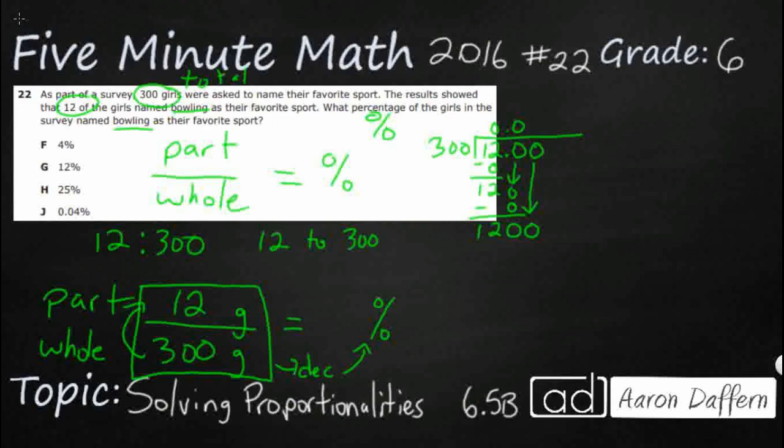So 300 goes into 1200, well look at this. Just ignore the two zeros, and just look at the 3 and the 12. 3 goes into 12 four times. If we want to double check, we can say 300 times 4 is going to be 1200. So there's our answer. It equals 0.04.